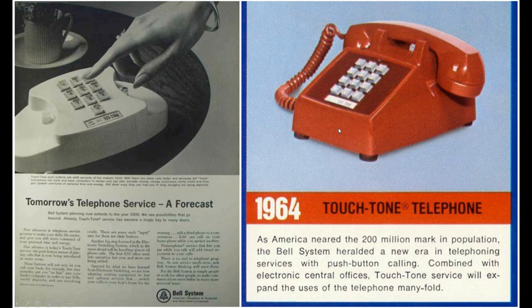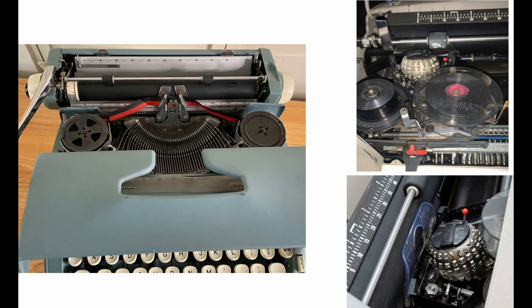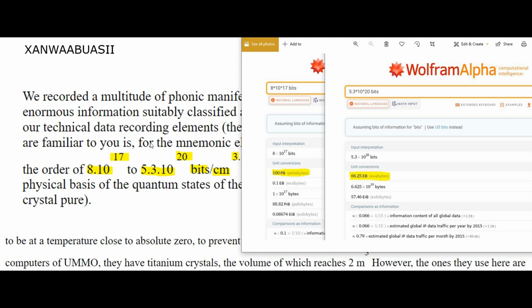In terms of phone technology, the big deal in the mid-60s was the upgrade to the touch-tone telephone. In terms of 1967 word processing, we have the portable non-electric typewriter, and then the new innovation was the Selectric typewriter with the power cord. The new Selectric typewriter had this electric head that smashed against the ribbon versus full manual operation. And then we have the UMO crew writing papers telling us about titanium crystal memories that store this many bits per cubic centimeter.